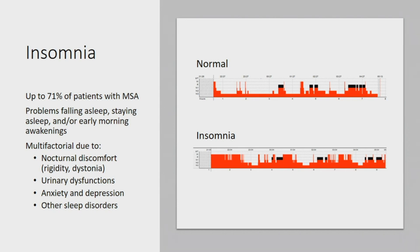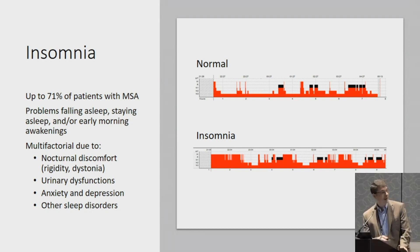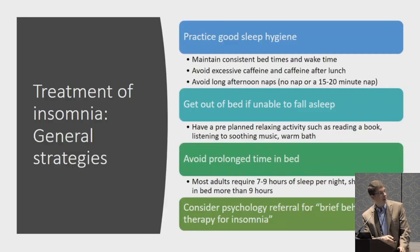There are lots of different reasons people have insomnia. With multiple system atrophy, the discomfort can be there, there can be agitation, there can be urinary issues — getting up so many times to go to the bathroom. And there are other issues that can disturb sleep as well.